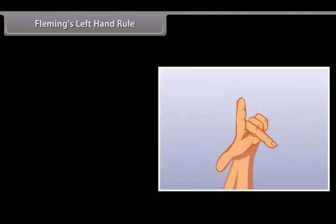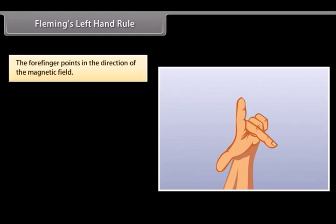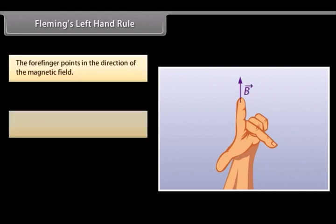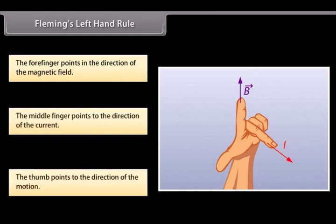Fleming's Left Hand Rule is a mnemonic to represent three directions. You need to stretch your thumb, forefinger and middle finger of your left hand. Each finger points to a specific direction. The forefinger points in the direction of the magnetic field. The middle finger points to the direction of the current. The thumb points to the direction of the motion. This is Fleming's left hand rule. Examples include woofers, subwoofers, and electrical actuators.